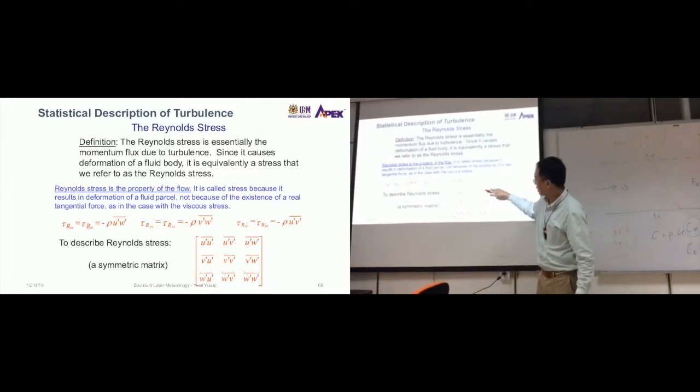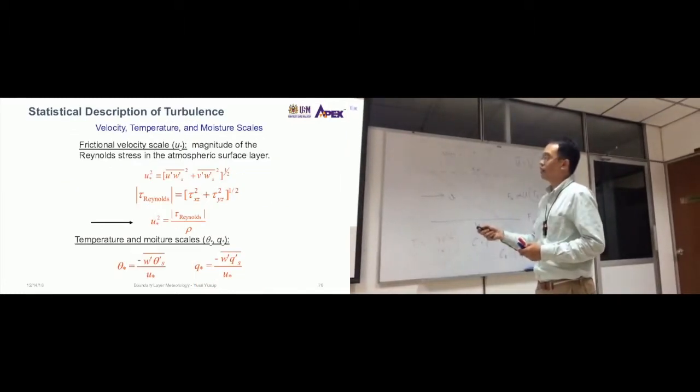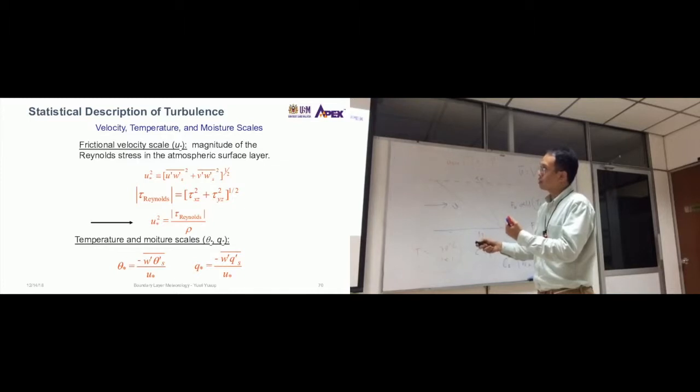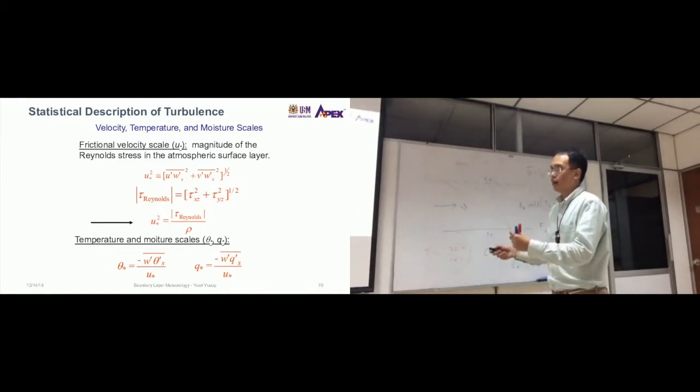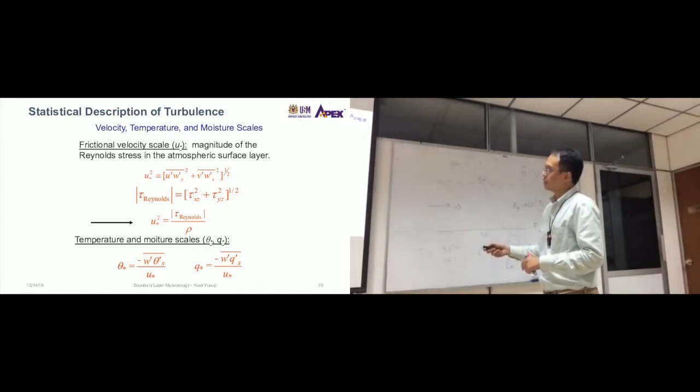Going back on top, frictional velocity scale, or u*, which is this one, is the magnitude of the Reynolds stress in the atmospheric surface layer. We can calculate u* from this equation. I told you just now that we can actually remove this one and just approximate friction velocity as this. But what we want to actually quantify is the total friction.